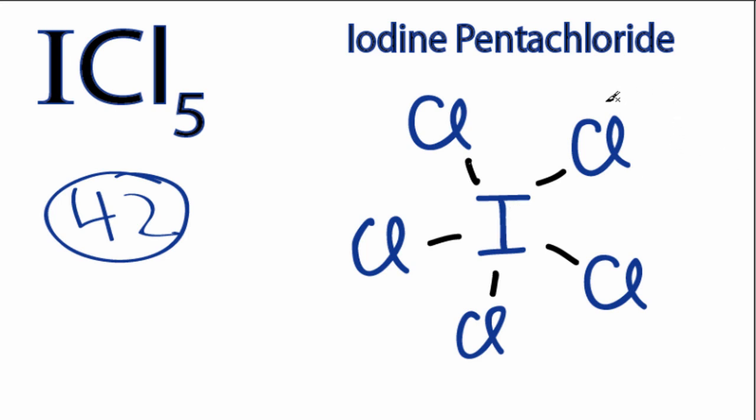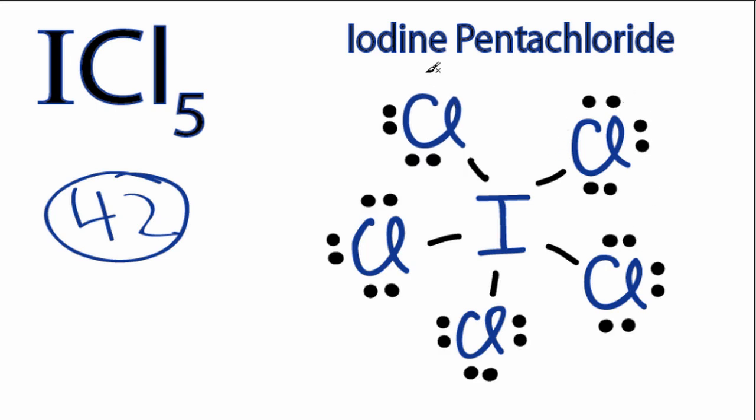Next we'll complete the octet for the chlorine atoms. So we have 10, 12, 14, and 40. So we've used 40 valence electrons and we've fulfilled the octets on all of the chlorines.